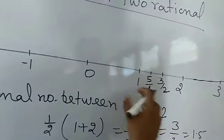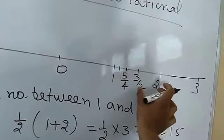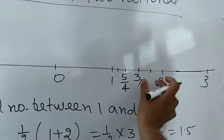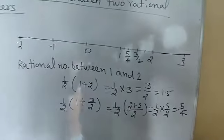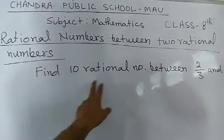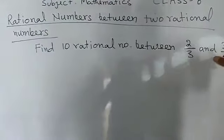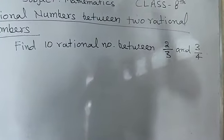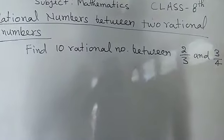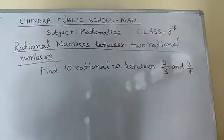If you repeat the same process — finding a rational number between 1 and 5 by 4, or between 3 by 2 and 2 — you keep getting numbers between 1 and 2. Repeating these steps gives you infinitely many rational numbers. However, if a question asks for 10 rational numbers between 2 by 3 and 3 by 4, this midpoint method takes too much time since you find numbers one by one. There is a direct method to find as many rational numbers as you want at once.